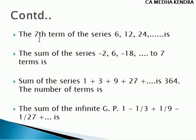The next question: find the seventh term of the series 6, 12, 24, etc. It has a common ratio of 2, so it is geometric progression. We are given A equal to 6, common ratio R equal to 2, and N equal to 7. We use the formula TN equal to AR power (N minus 1) to find the seventh term.